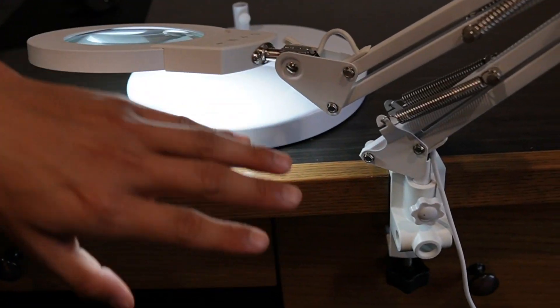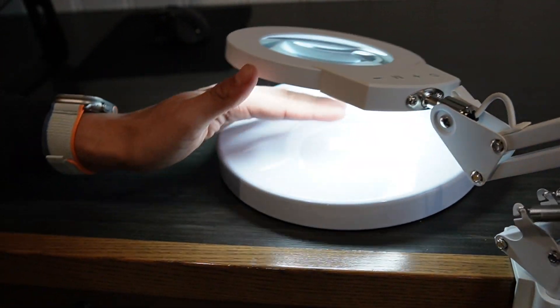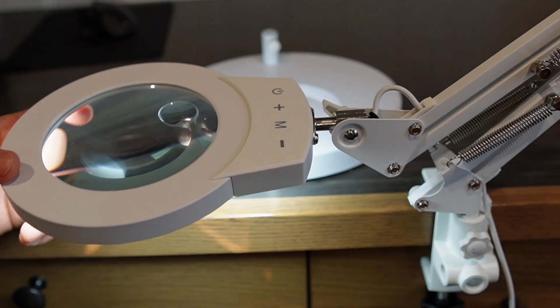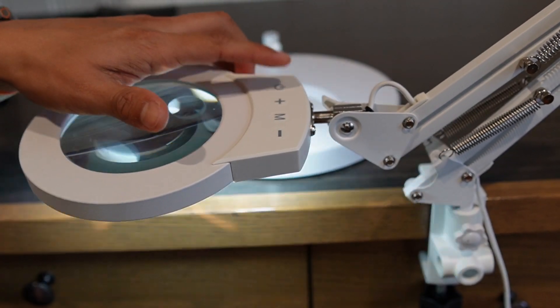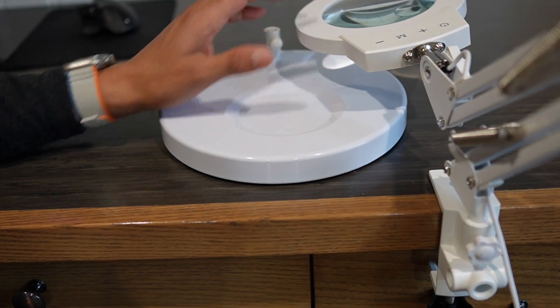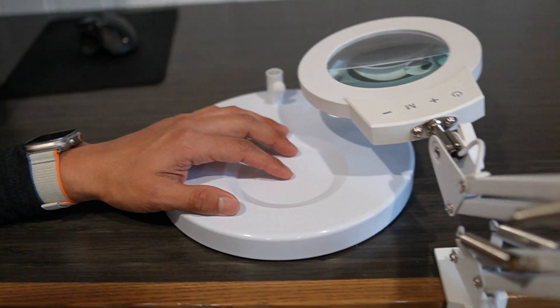It's pretty versatile because if you don't want to clamp the desk, you also got the stand it comes with. So if you're looking for a magnifying glass lamp combo to either work on some electronics or just read tinier writing, definitely check this one out.